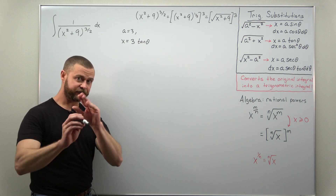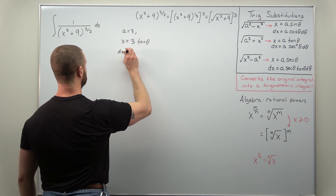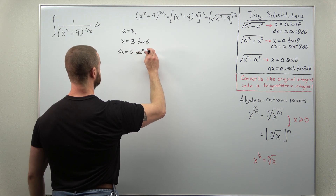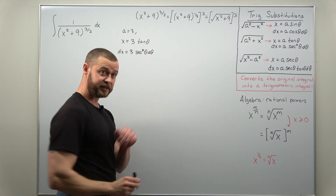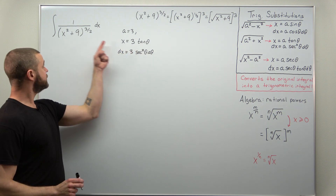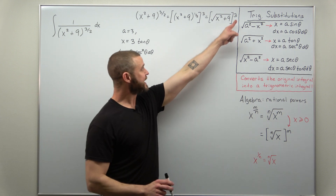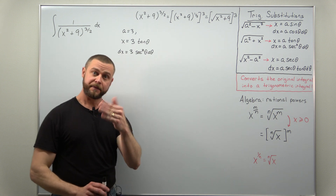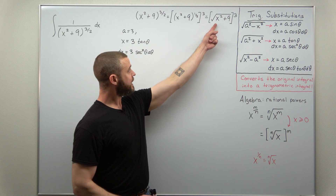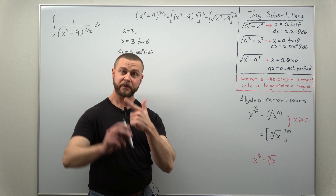I always calculate the differential immediately when I write down the substitution: dx = 3 sec²θ dθ. We're going to use the substitution to eliminate the radical, but we have to be careful because there's an outer power of 3 to account for. So let's first do the usual work of getting the square root to simplify, and then cube it.